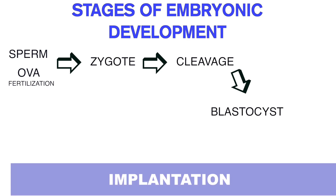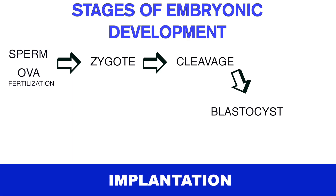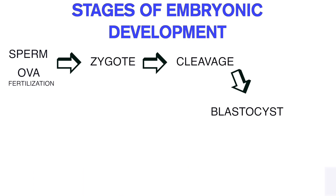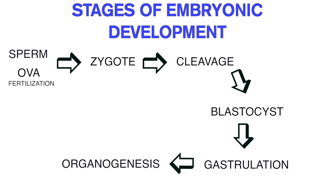The blastocyst stage is where implantation occurs in the uterine wall — the blastocyst attaches itself to the walls of the uterus to create a connection between the mother and the embryo. Then mammals have the gastrulation stage followed by organogenesis. This is how these stages proceed in sexual reproduction in mammals, but there are some exceptions where normal embryonic development deviates, giving us the phenomenon known as embryonic diapause.